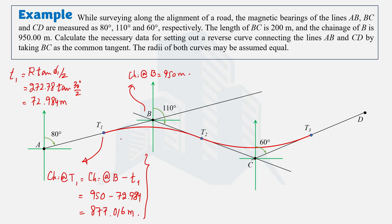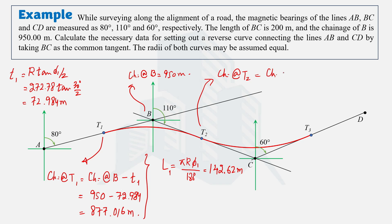To find the chainage at T2, we need the length of the first curve. Using the formula L = π × R × Δ1 / 180, and substituting the values of π, R, and Δ1 = 30°, the length of the first curve is 142.62 meters. Therefore, chainage at T2 = chainage at T1 + length of first curve = 877.016 + 142.62 = 1019.63 meters.